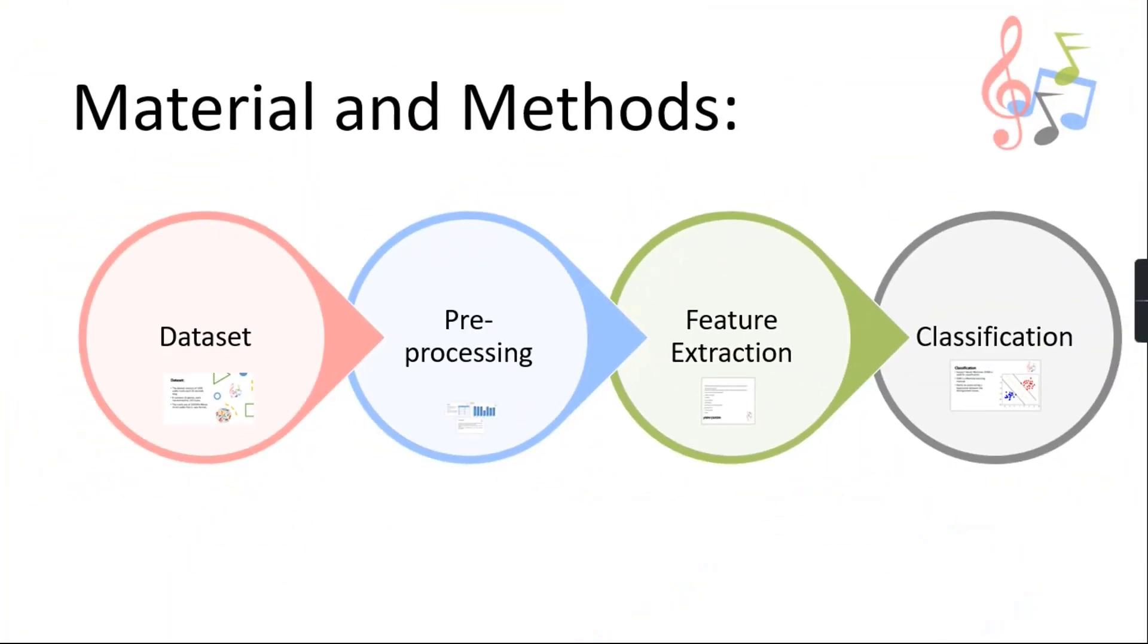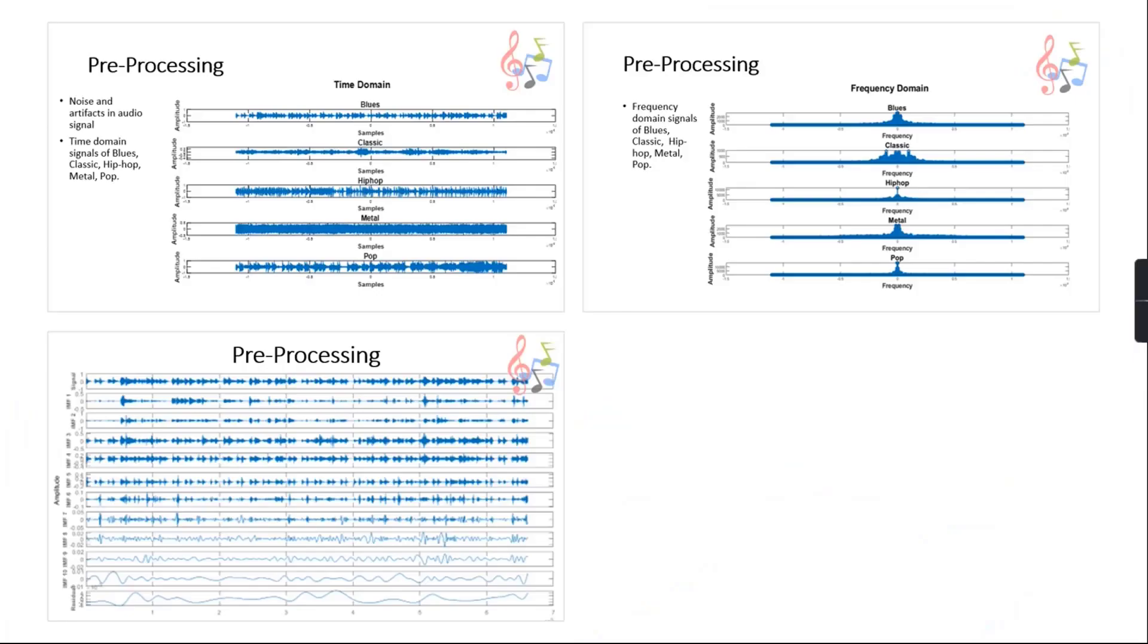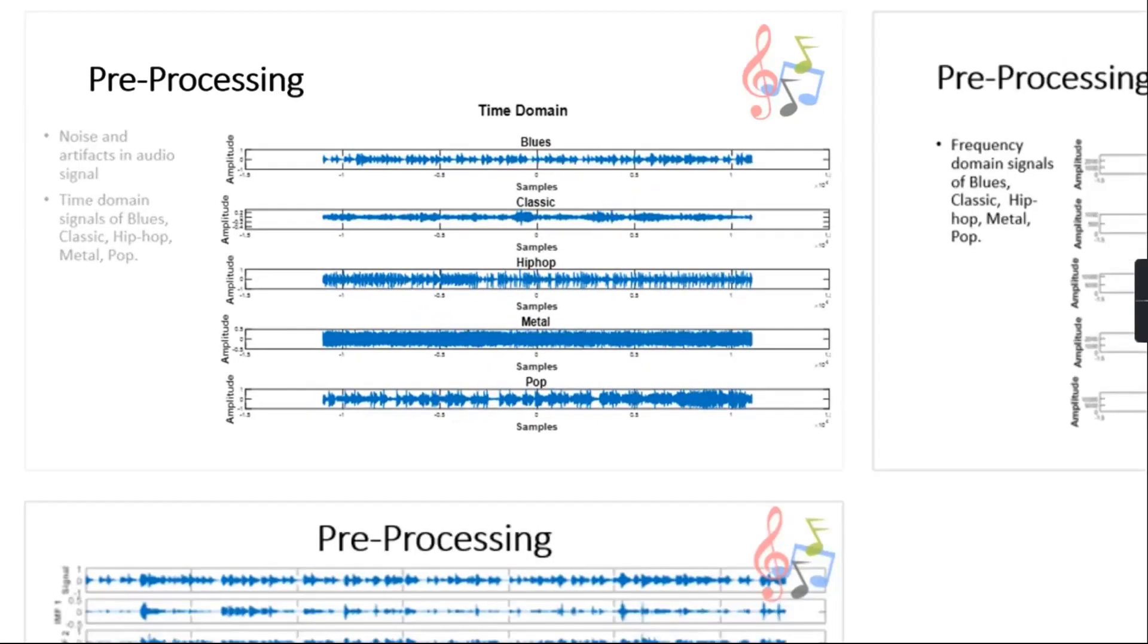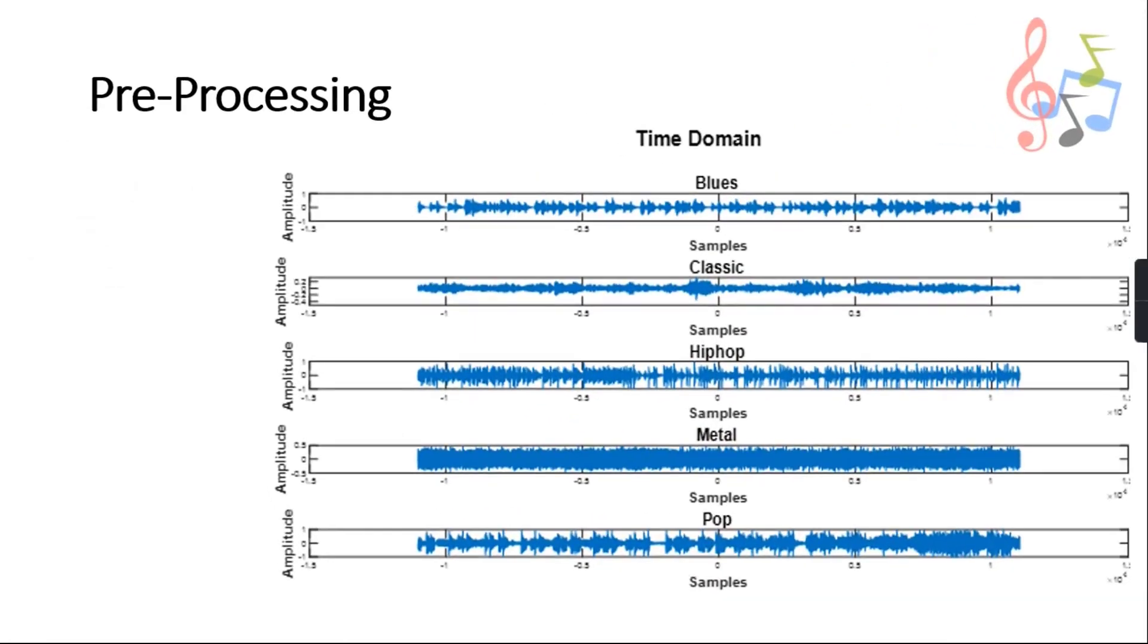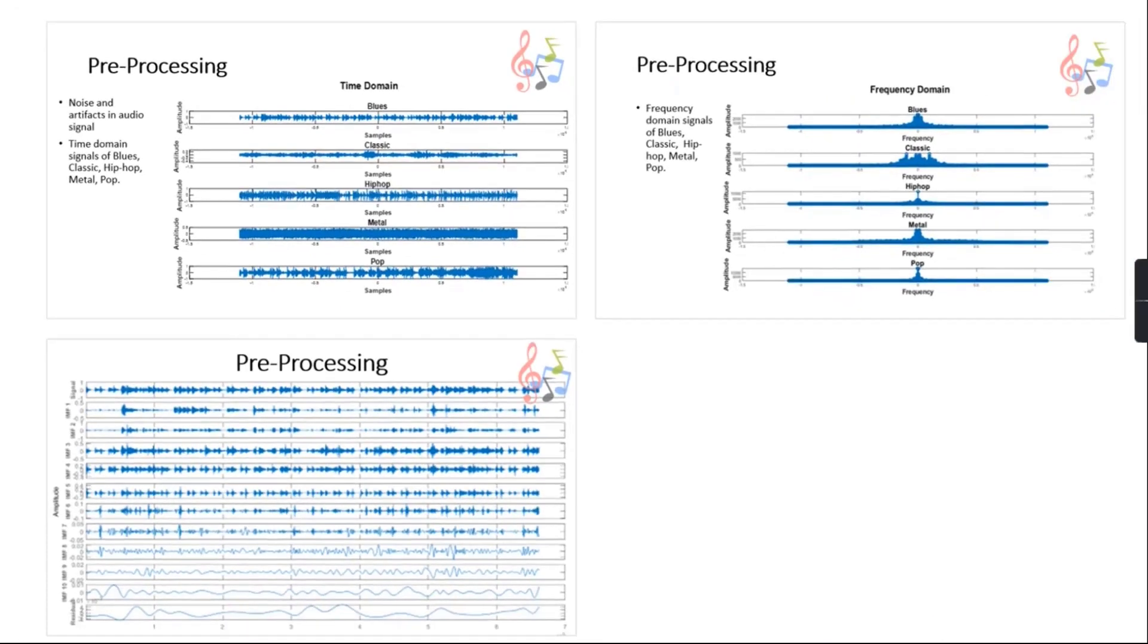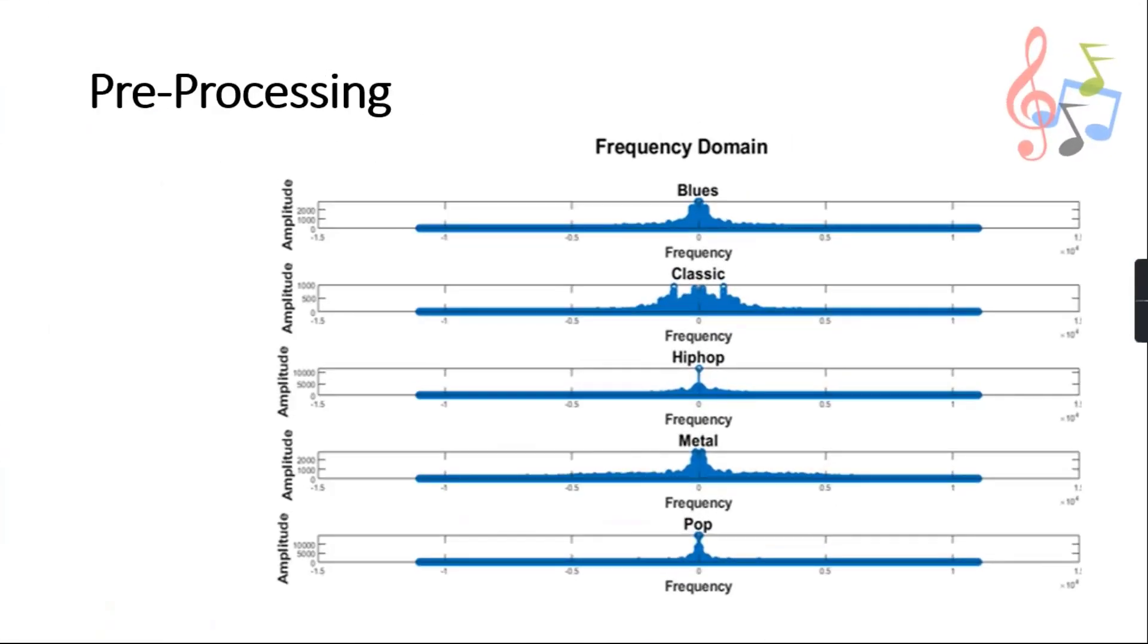Moving on to the pre-processing. Pre-processing is done because number of disturbances like harmonics, electromagnetic interference noise interrupts the raw audio signal. And this is how audio signal of each genre looks like in time domain, and this is how the audio signal looks like in frequency domain.